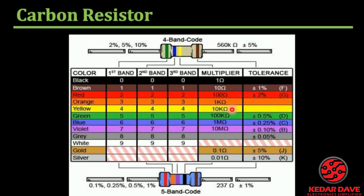Multiplying 56 by 10 kilo ohms gives 560 kilo ohms. The last band is brown, which represents tolerance. Brown color gives us a tolerance of plus or minus 1 percent. So the carbon resistor's value is defined as 560 kilo ohms plus or minus 1 percent tolerance.